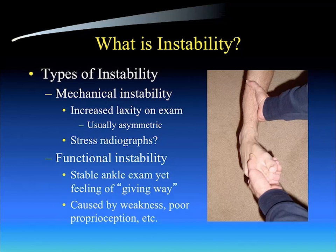The use of stress radiographs to highlight that mechanical instability — that asymmetric inversion instability — has been controversial in the past, but it's something that can be done. If you demonstrate increased inversion and tibial talar tilt on stress radiographs as compared to the contralateral side, that is a mechanical instability pattern.